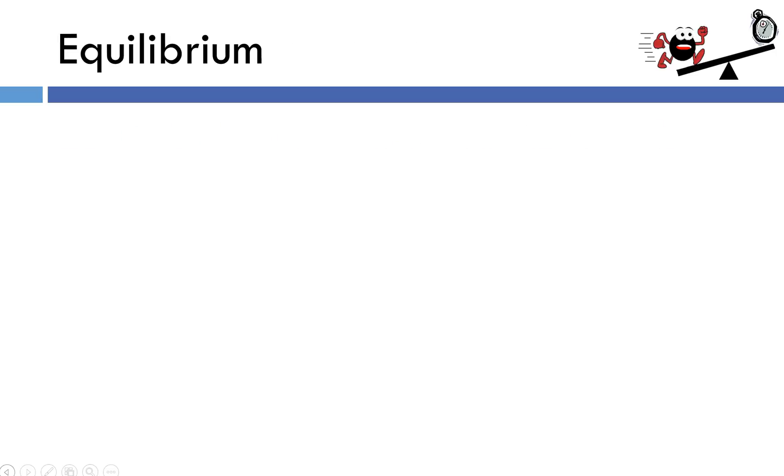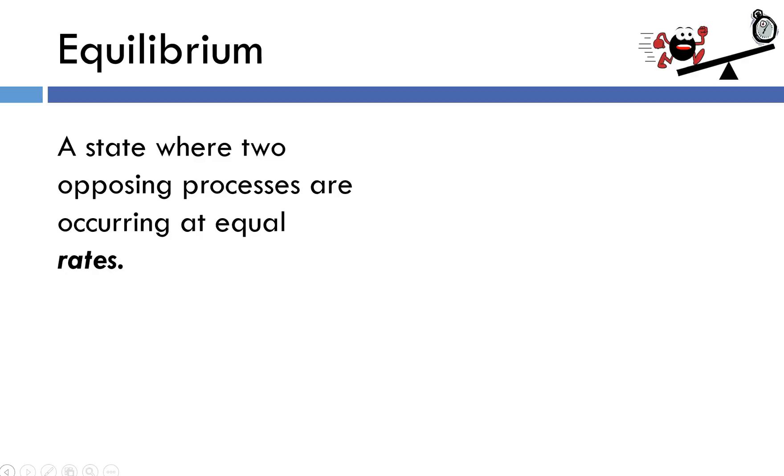Let's get started with a quick definition of what equilibrium is. Equilibrium is a state where two opposing processes are occurring at equal rates.